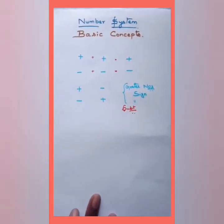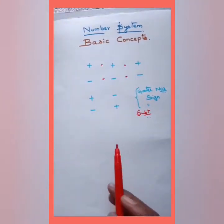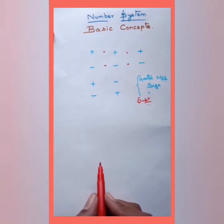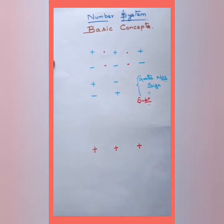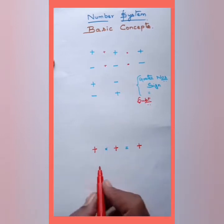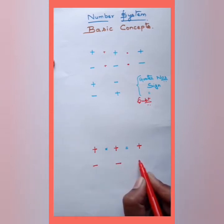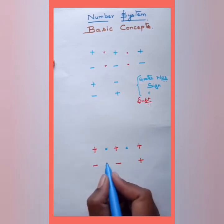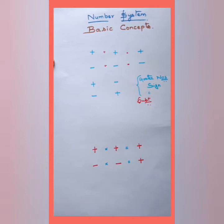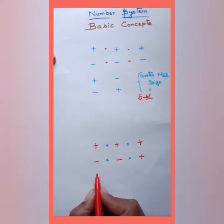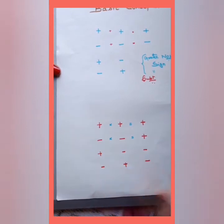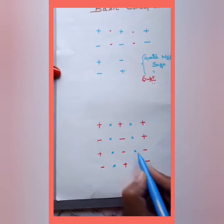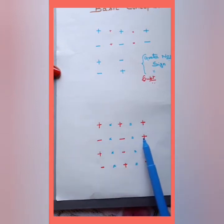For multiplication, many people get confused between multiplication and addition rules, so pay attention. Plus × plus = plus. Minus × minus = plus. Plus × minus = minus. Minus × plus = minus. So while multiplying: same signs give plus, different signs give minus.